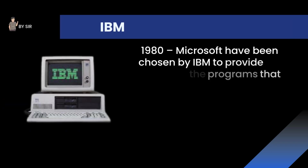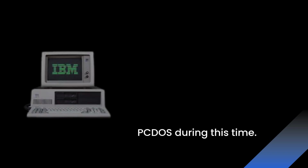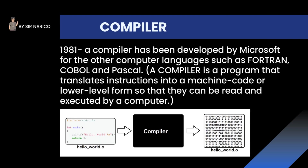In 1980, Microsoft was chosen by IBM to provide many of the programs that would eventually run on the IBM PC. QDOS was modified by Microsoft to run on the IBM PC and called PCDOS. In 1981, a compiler was developed by Microsoft for other computer languages such as Fortran, COBOL, and Pascal. A compiler is a program that translates instructions into machine code or lower-level form so that they can be read and executed by a computer.